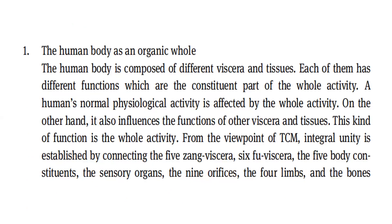The human body is composed of different organs and tissues. Each of them has different functions which constitute part of the whole activity. A human's normal physiological activity is affected by the whole activity. On the other hand, it also influences the functions of other organs and tissues. This kind of function is the whole activity. From the viewpoint of TCM, integral unity is established by connecting the five zang organs, six fu organs, the five body constituents, the sensory organs, the nine orifices, the four limbs, and the bones.